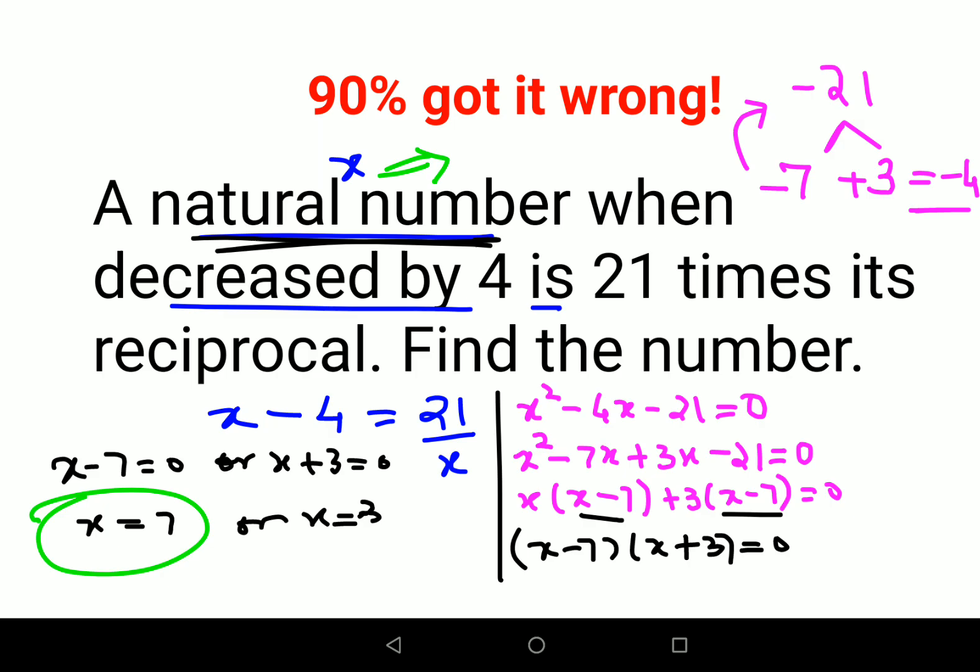If you want, let's verify this orally. We'll decrease 7 by 4, you get 3. And 21 times its reciprocal means 21 into 1 by 7, that also gets you the answer as 3. So we can definitely say that our working is absolutely correct.